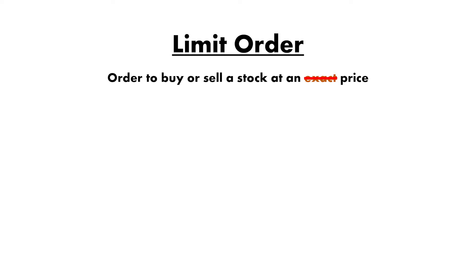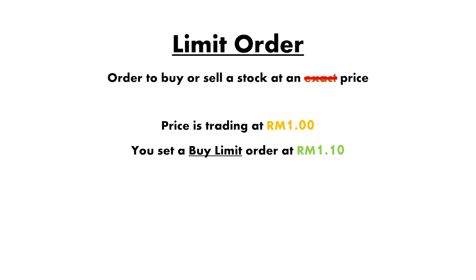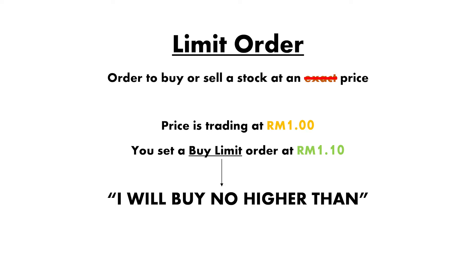However, in some cases you don't really buy at the exact price. For example, if the price is trading at RM1 but you set a buy limit order at RM1.10 — remember what it means? It means I will buy no higher than RM1.10. And since the stock is trading at RM1, which is lower than your RM1.10 limit order, you will end up buying at RM1.